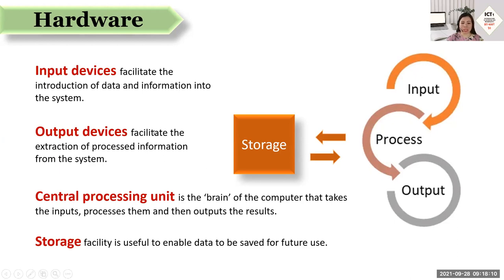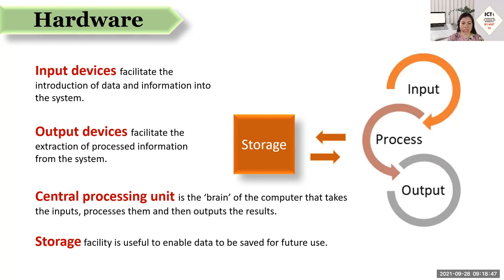Another is the output devices. Those devices are used in order to generate the results from the computer. Examples are the monitor, the printer, the speakers, because output devices facilitate the extraction of processed information from the system and generate meaningful information. Another classification is the central processing unit, which we consider as the brain of the computer, which takes the inputs, processes them, and then outputs the results.